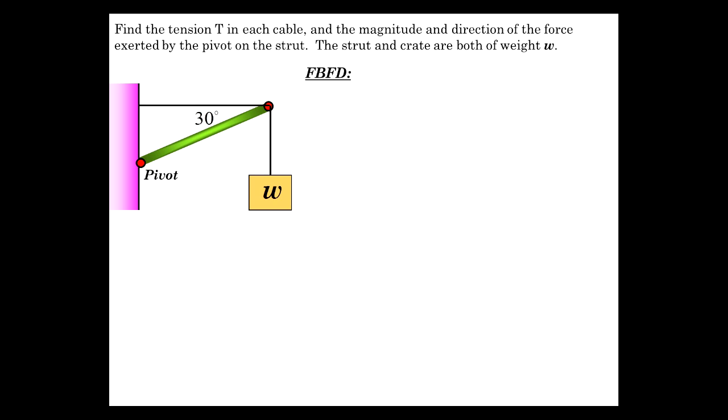Let's find the tension in each cable and the force on the pivot point. We do a free body on the strut itself and put the forces where they belong, like tension going directly to the left at 30 degrees from the point of contact. The weight is acting in the center, so weight acts straight down. On the end, we have weight again.